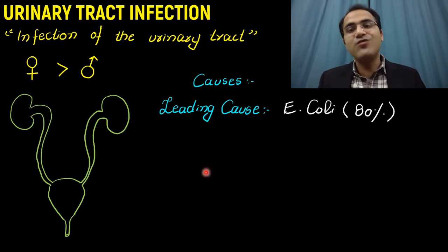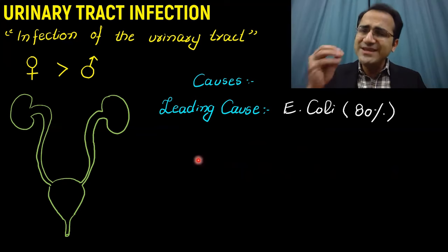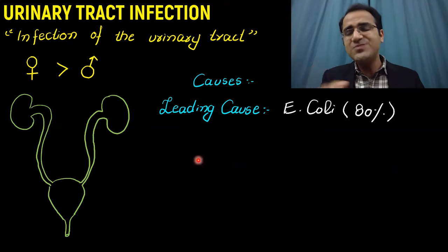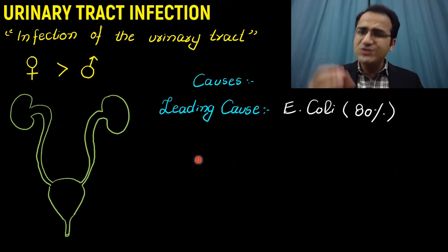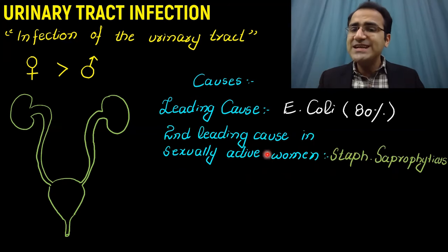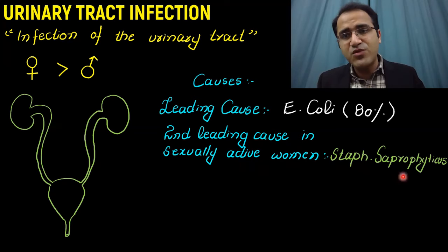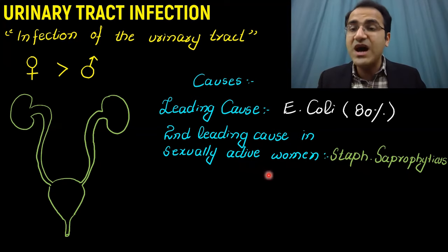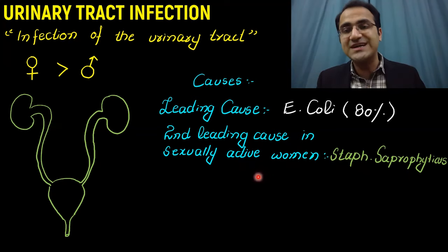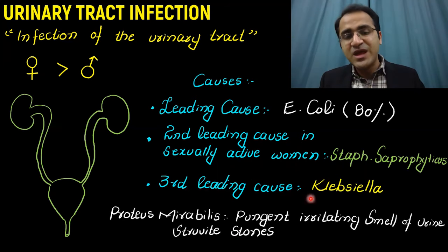Coming to the causes of UTI, the leading cause is E. coli — 80% of urinary tract infections are caused by E. coli. The second leading cause in sexually active women is Staphylococcus saprophyticus. Sexually active women are very vulnerable to urinary tract infection. The third leading cause is Klebsiella.